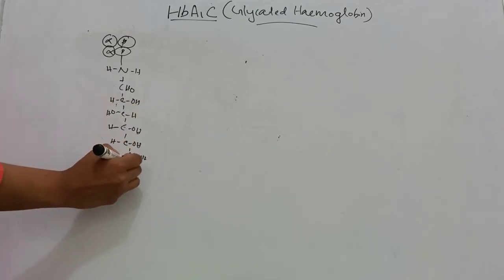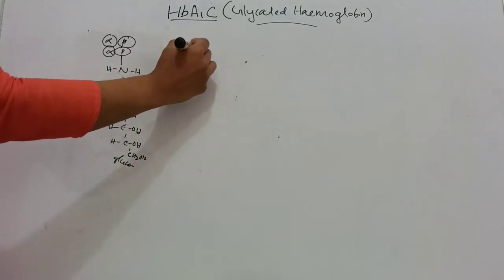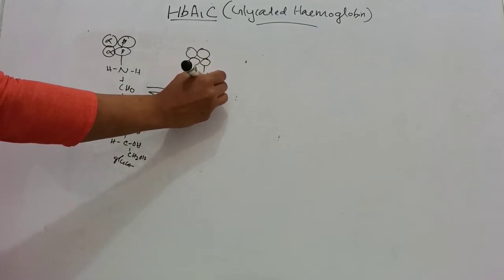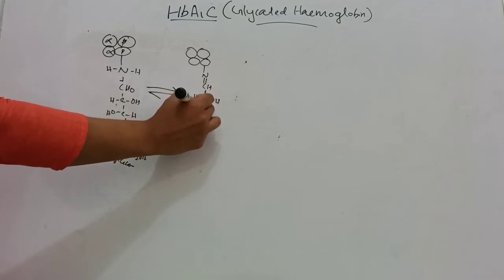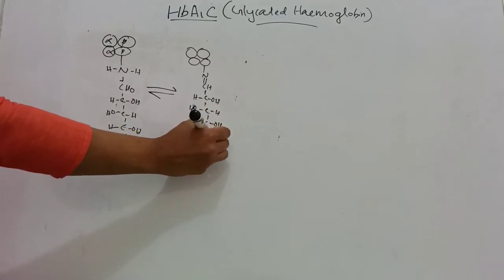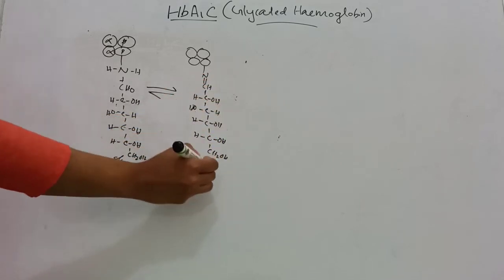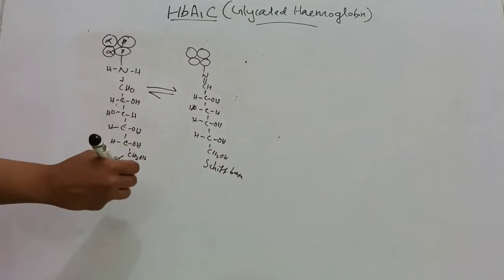This glucose molecule is attached and there is a rearrangement. There will be formation of Schiff base, that is an unstable intermediate known as aldimine. The N-terminal end here is CH, CHOH. This is known as Schiff base, aldimine, an unstable intermediate.